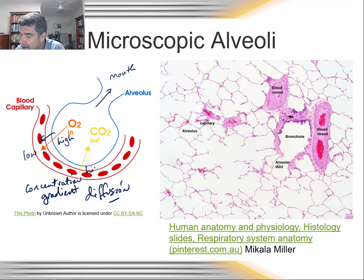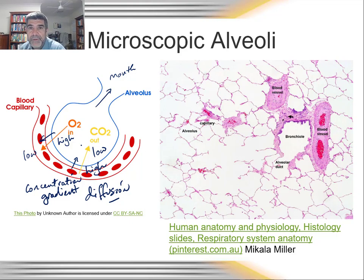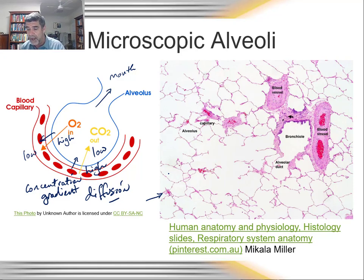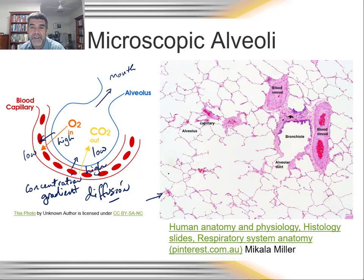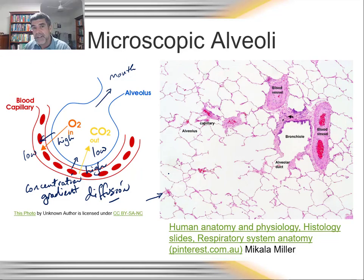Carbon dioxide levels are high in the blood and low in the alveolus, so it diffuses in the opposite direction. Blood cells won't move through because they're too big to pass through the capillary walls, but the gases can diffuse through. Looking at a cross-section slide, a large part of lung tissue consists of interconnected tubes and spaces for gases to move around, giving a big surface area inside the lungs, with very small alveoli and a visible blood supply around them.